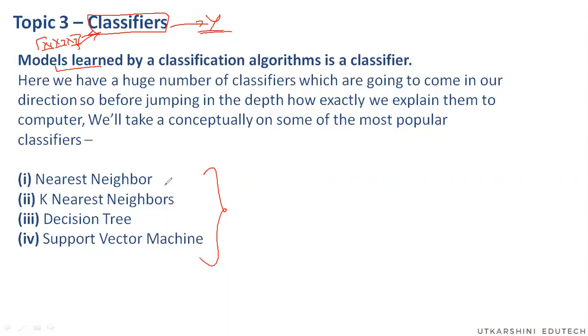we'll discuss the most common four classification algorithms here. The first one is Nearest Neighbor, second one is K Nearest Neighbors, third is Decision Tree, fourth is Support Vector Machine.